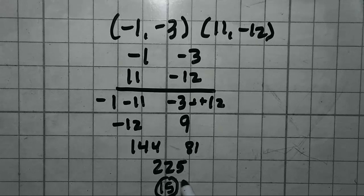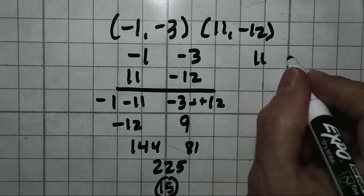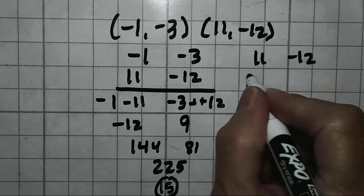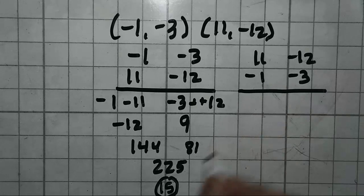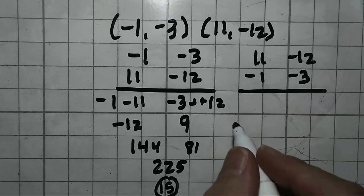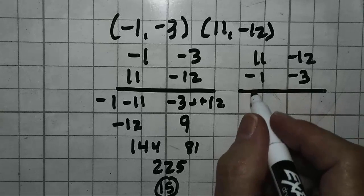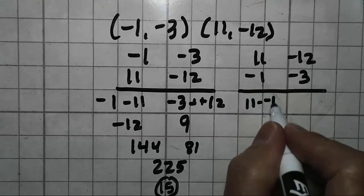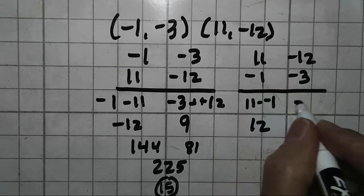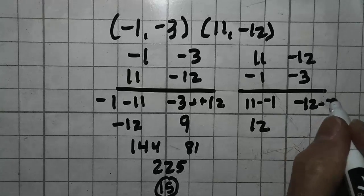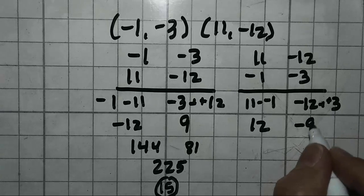Now I want you to hold that in your head for a minute because we're going to do it again. We're going to do it the opposite way. We're going to put 11, negative 12, and negative 1, negative 3. And I'm going to show you that the answer is going to come out to be 15 just like it did the other way. So it doesn't matter which set of numbers you put on the top. 11 minus negative 1 is the same thing as 11 plus 1, which is 12. Negative 12 minus negative 3 is the same thing as negative 12 plus 3, so it's negative 9.